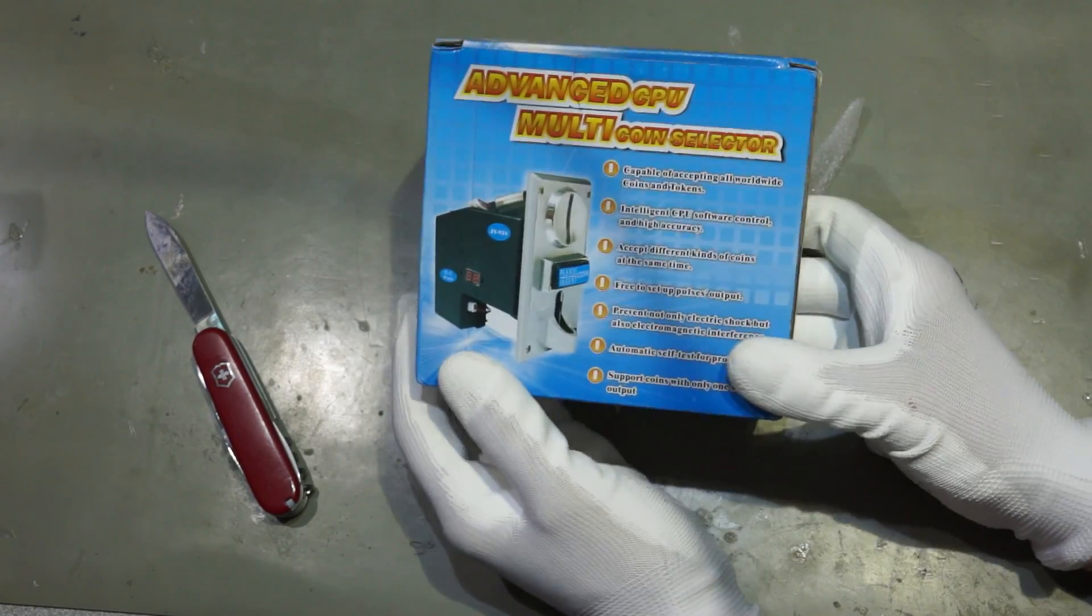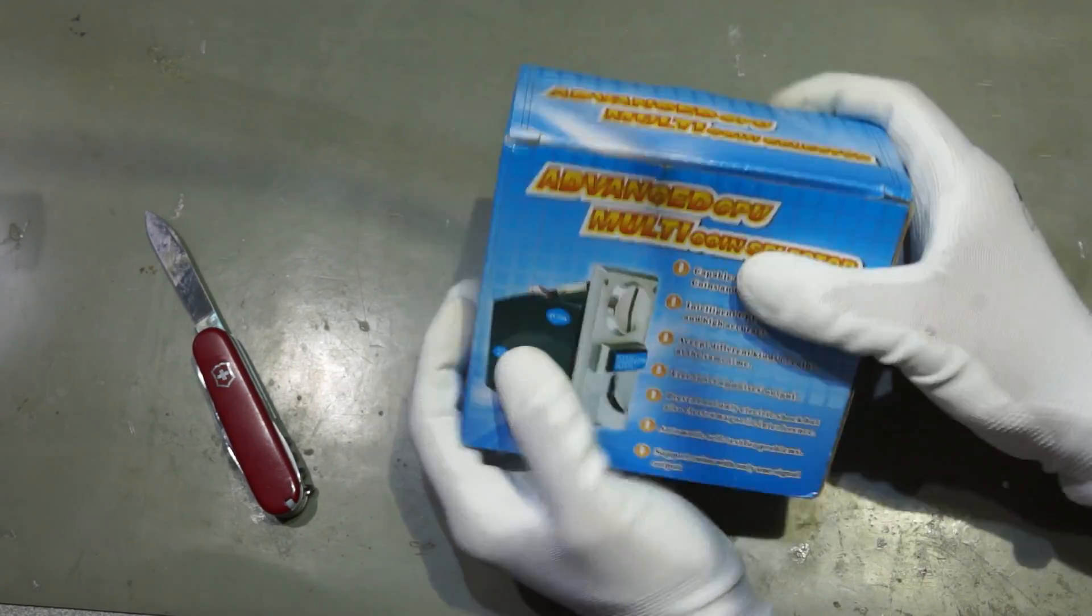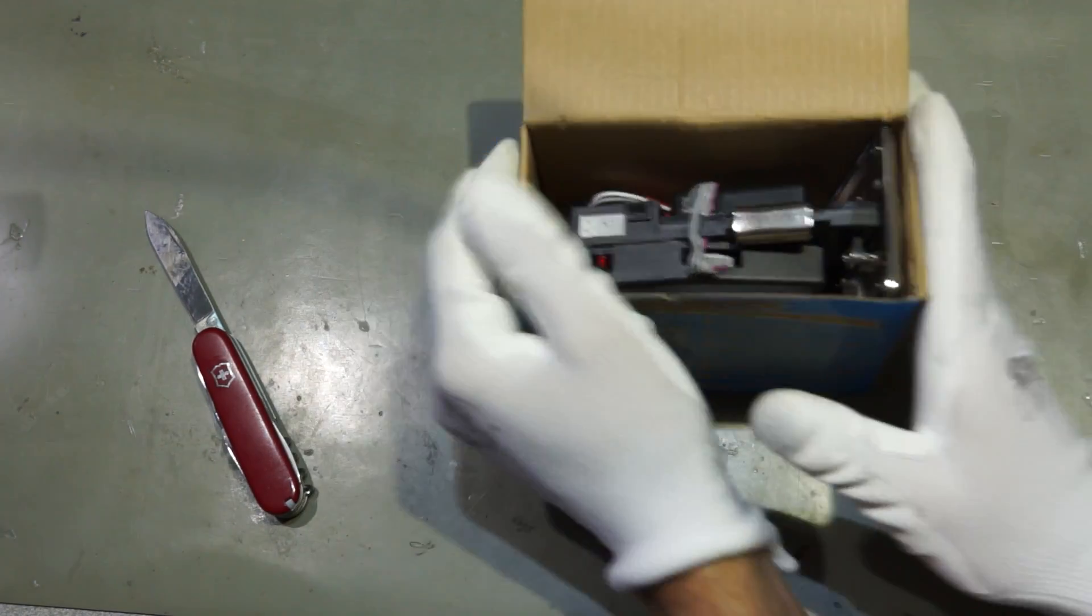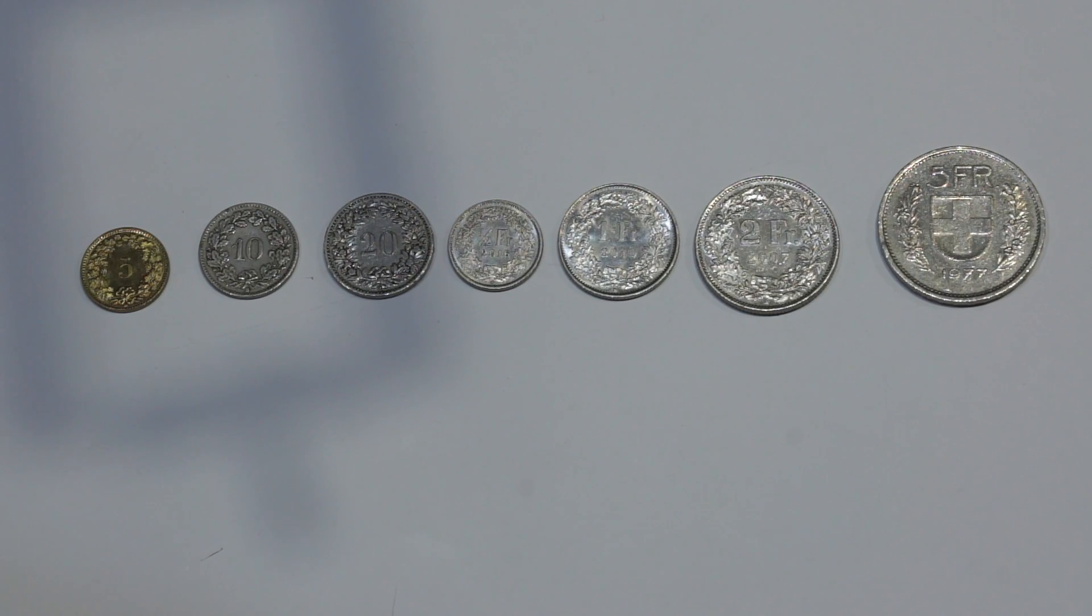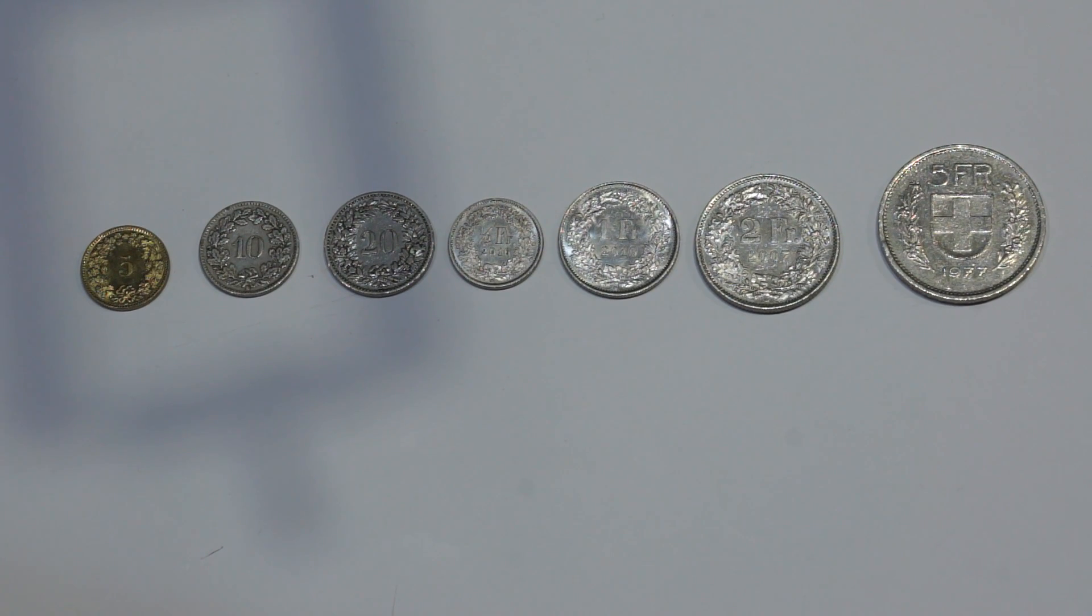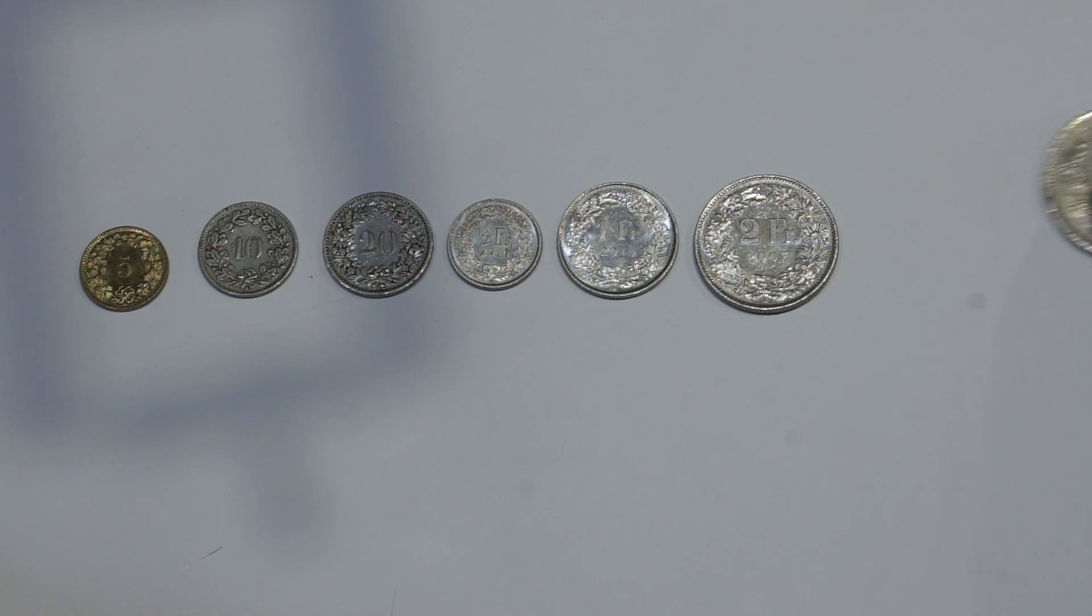The next one is also intended for the retro console. It is an advanced coin counter. You get these counters in 6 different versions. The only difference between the versions is how many coins they can separate. The 923 model can distinguish between 3 and the 928 model between 8 different coins. In Switzerland, we have 7 different coins. We decided not to use the 5 cents and the 5 francs coin.